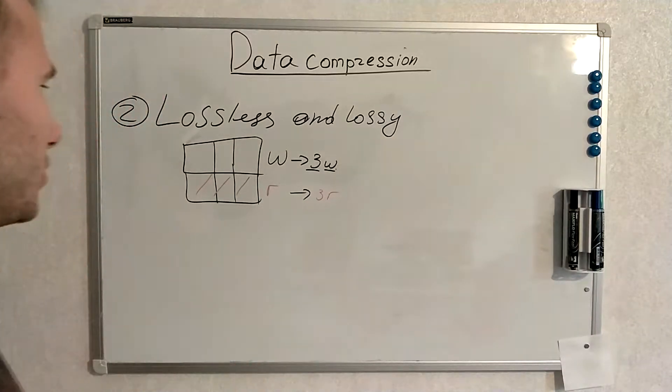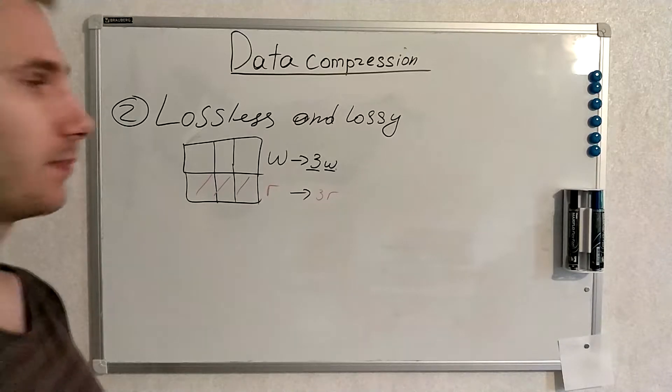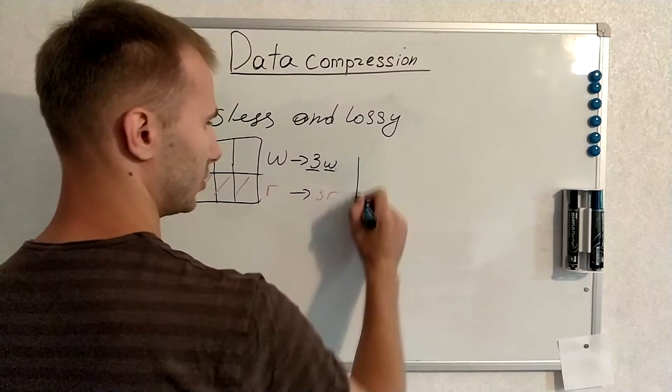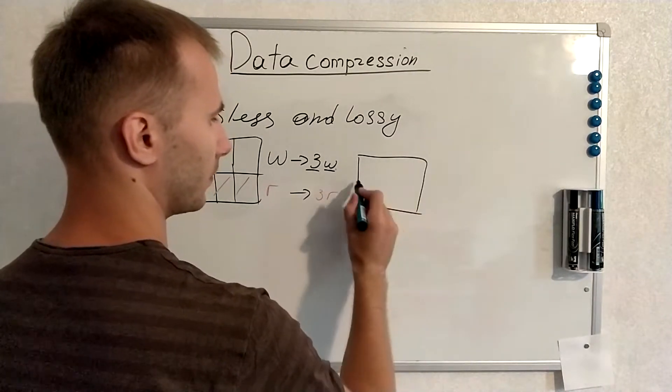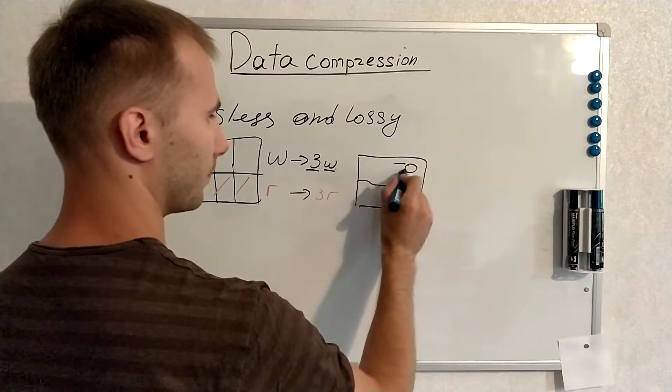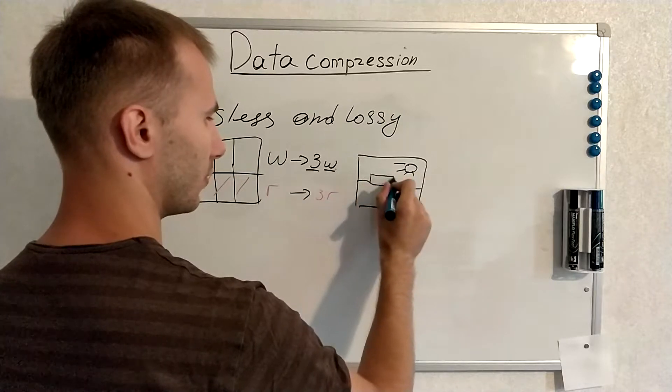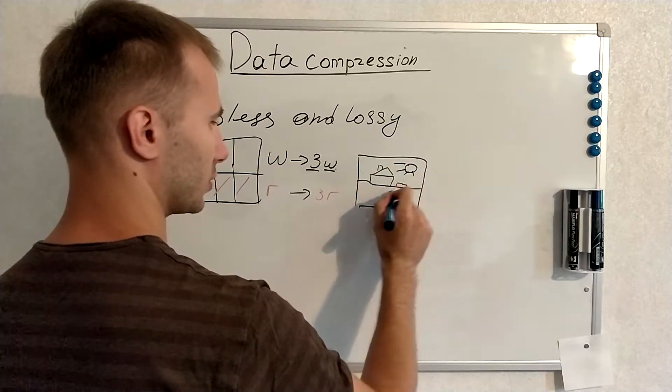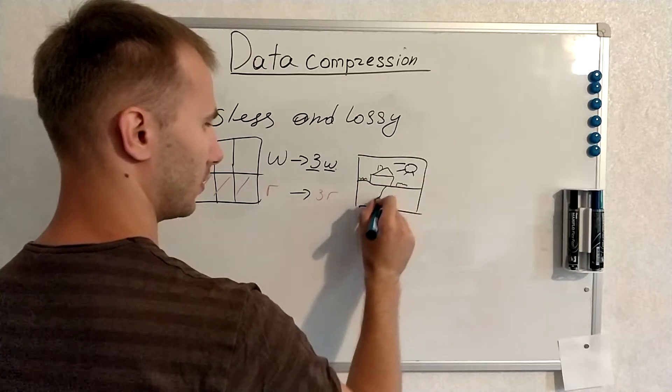And lossy compression is such a way of data compression where we lose some information. A good example will be we have an image of some village on the horizon. This is a big building, this is small bushes or whatever, a river.